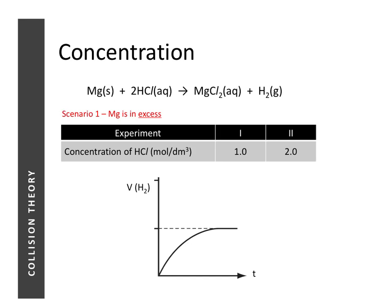The first factor we're going to look at is concentration. We are looking at a reaction that produces a gas, so we can monitor the speed of reaction by monitoring the volume of gas produced with time. We're going to perform two experiments: the first using hydrochloric acid at 1 mol per dm³, and the second using a more concentrated hydrochloric acid at 2 mol per dm³.